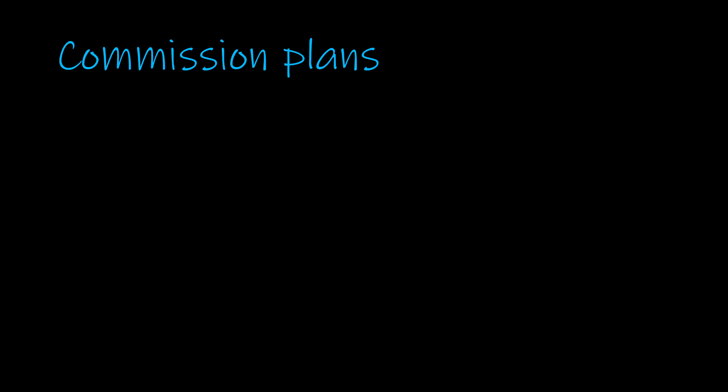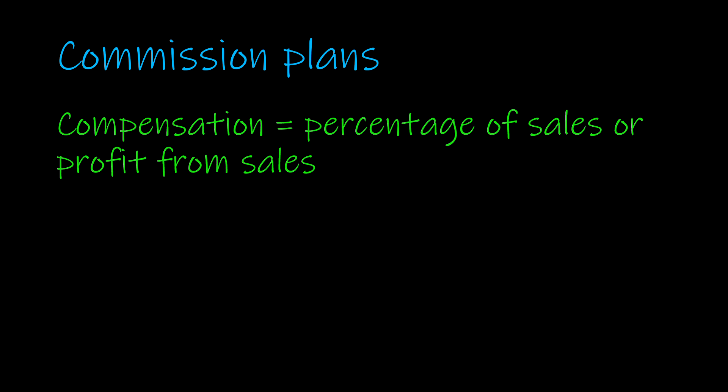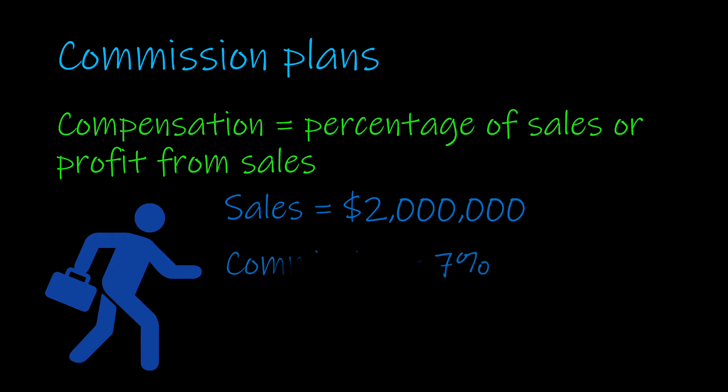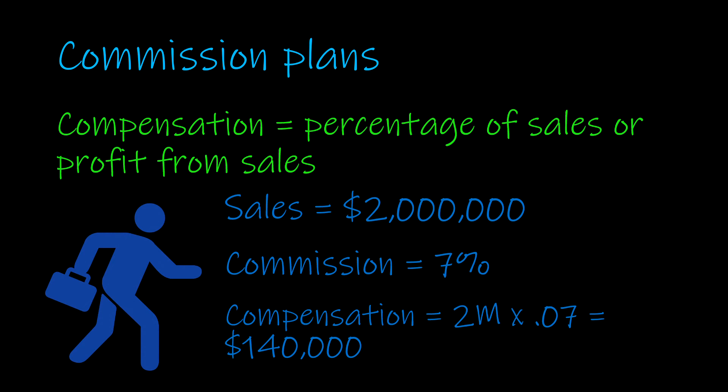Another type of incentive plan is called a commission plan. A commission plan is a form of compensation where a percentage of sales or the profit from the sales determines the employee's compensation. This is different from a piece rate plan — a piece rate plan focuses on the number of units produced, whereas commission plans focus on dollars generated. Let's walk through an example of what a commission plan would look like. We have a salesperson producing $2 million a year in sales on a commission rate of 7%. We would take the $2 million, multiply it by 7%, and the employee's compensation would be $140,000.